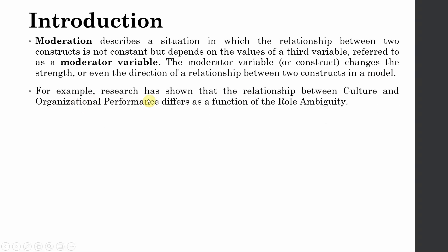For example, research has shown the relationship between culture and organizational performance differs as a function of role ambiguity. If there is high role ambiguity, the relationship between collaborative culture and organizational performance actually weakens. However, at low role ambiguity, this particular relationship is further strengthened.